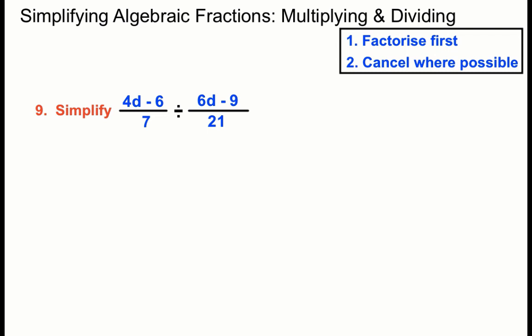Okay, here we've got a bit of a combination here with some factorising and dividing by a fraction. Once again let's just write it out. 4d minus 6 over 7 stays normal. We'll turn it into a multiply and we'll reciprocate the second fraction there. 21 over 6d minus 9 this time.